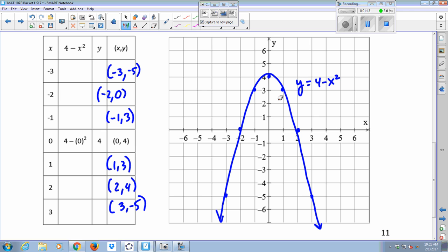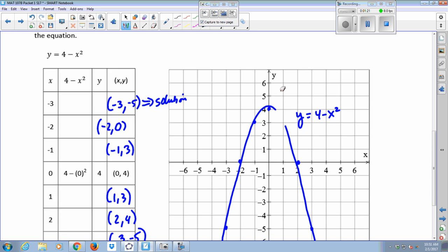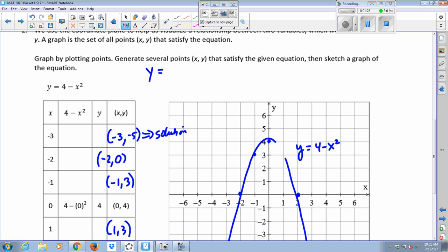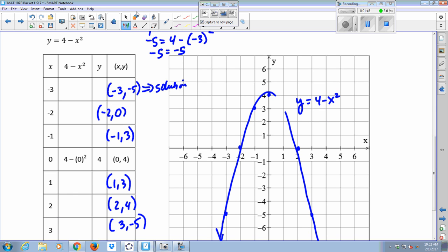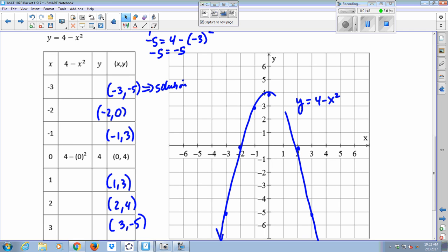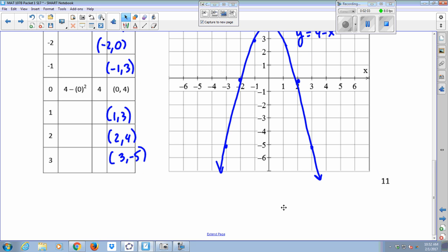We've only plotted here seven of the solutions. So this is a solution because when I put in negative 3 for x and negative 5 for y, the left and right sides are equal to each other. Every single possible point that that line goes through represents a solution to that equation, and this graph continues to go on forever towards negative infinity.